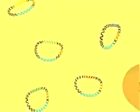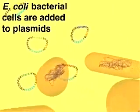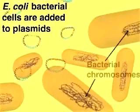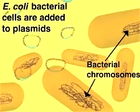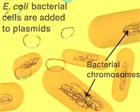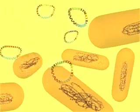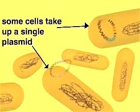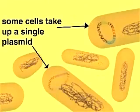Next, the host cells, E. coli bacteria, are added to the recombinant plasmids. The cells have been treated with calcium chloride to make them permeable to DNA molecules. Through a process called transformation, a few cells take up a recombinant plasmid, while most other cells do not.